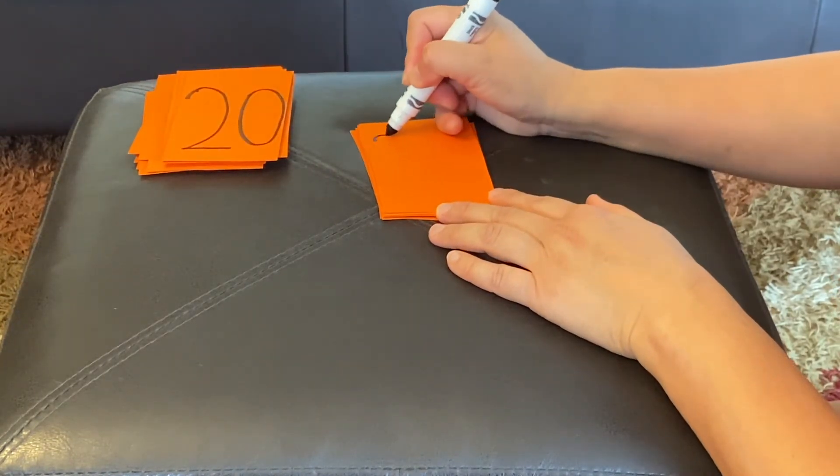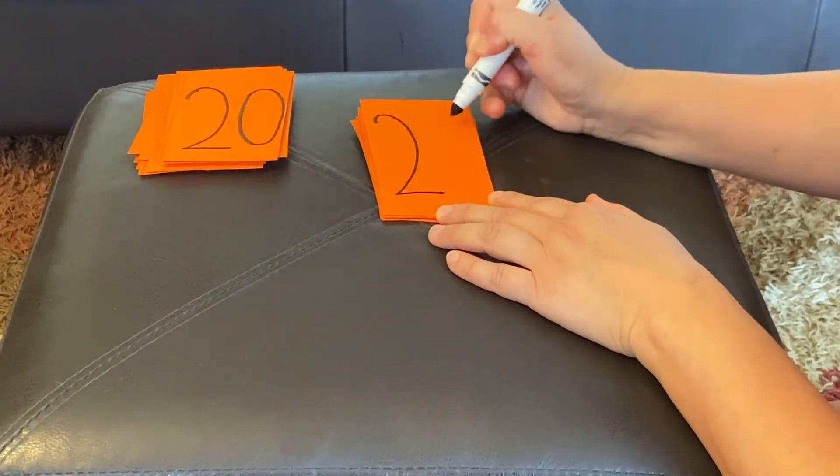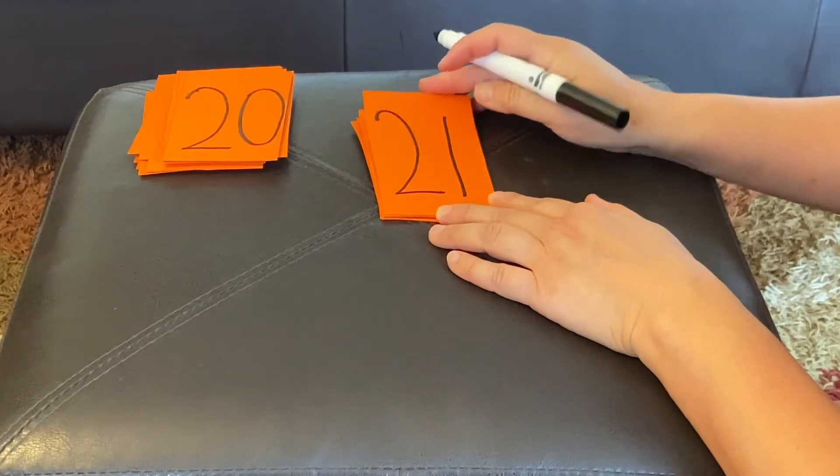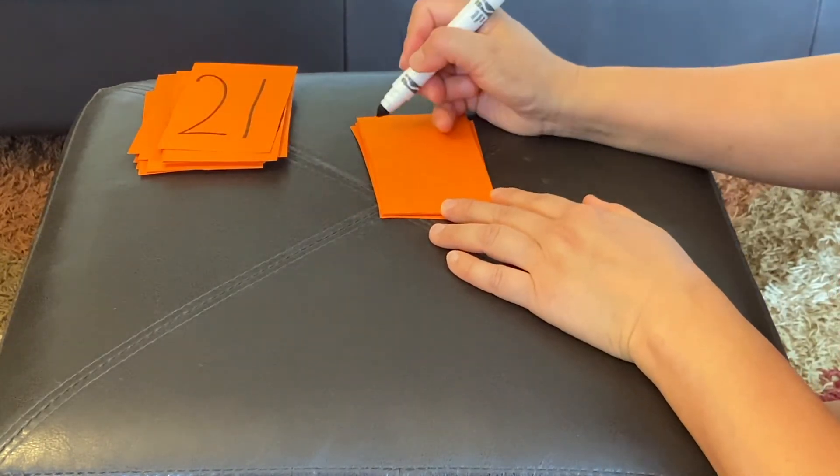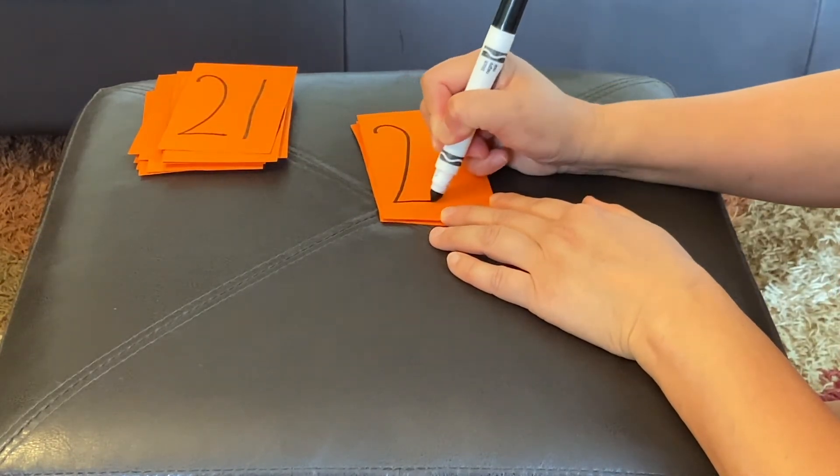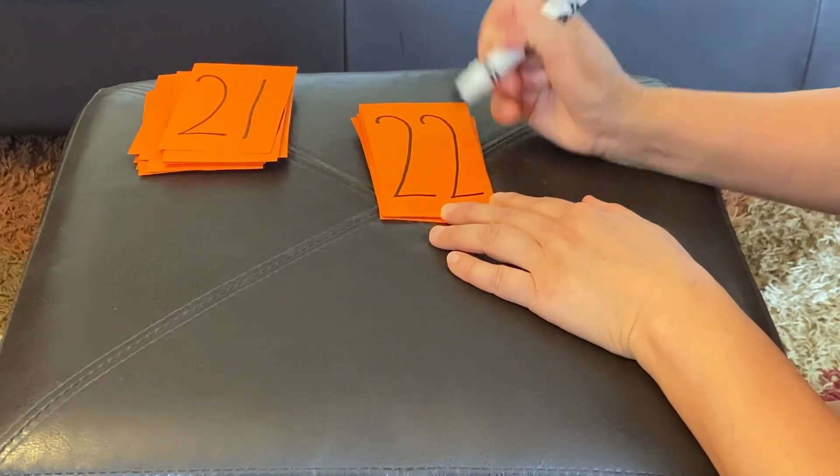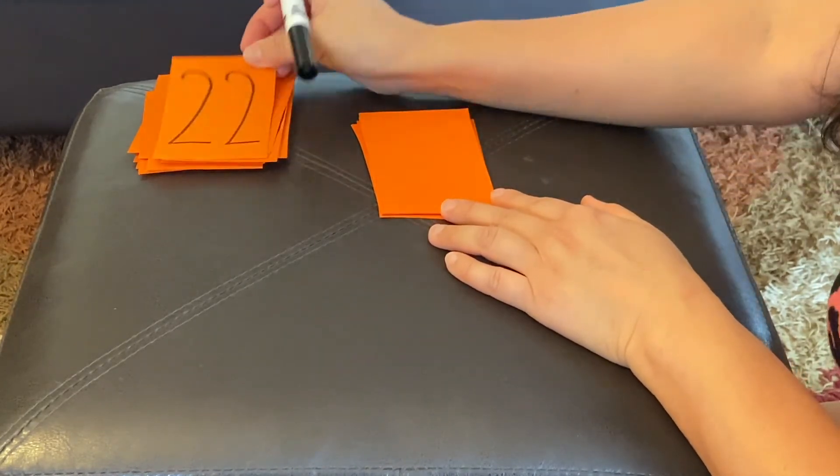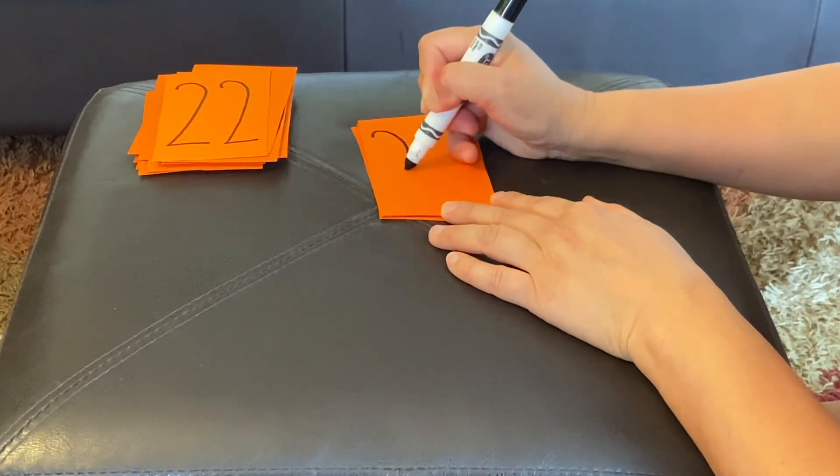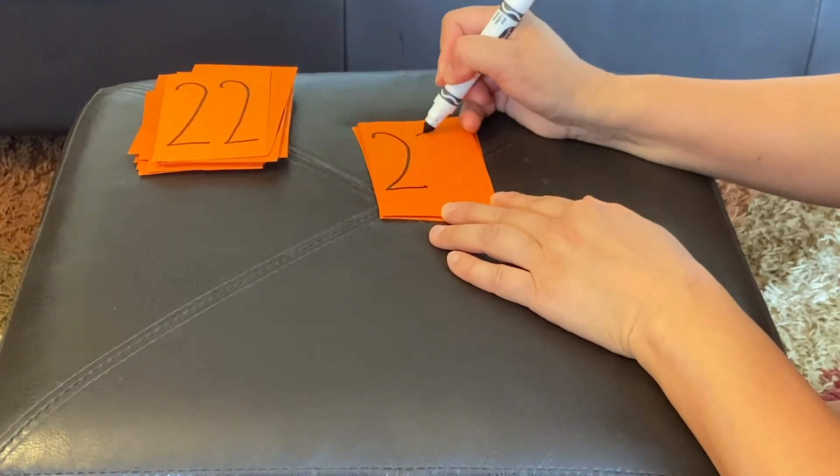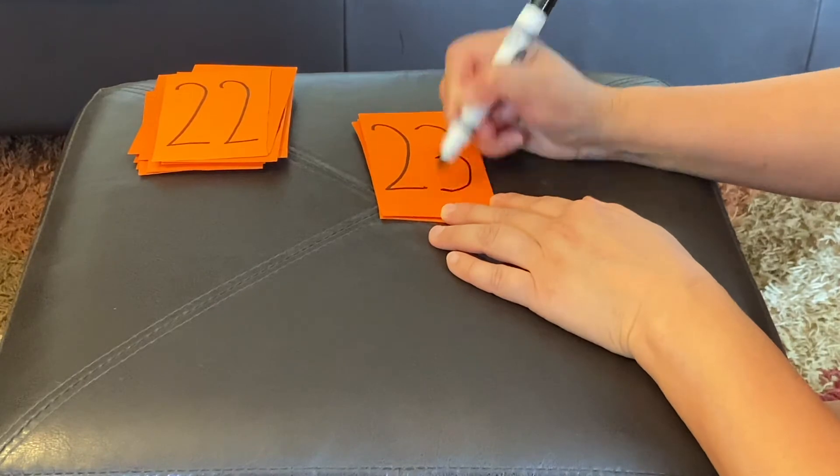Twenty-one is a two, and a one. Twenty-two is a two, and a two. Twenty-three is a two, and a three.